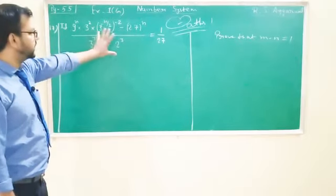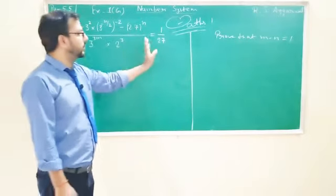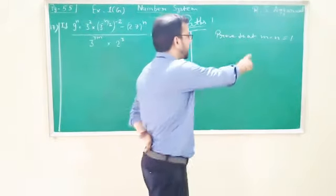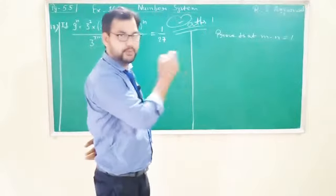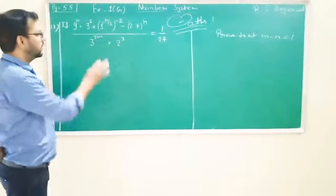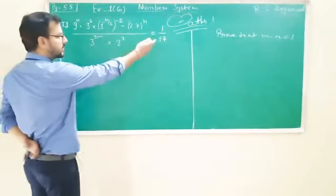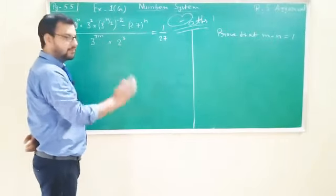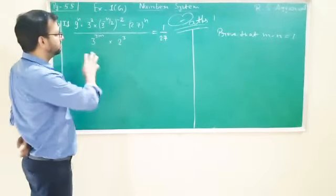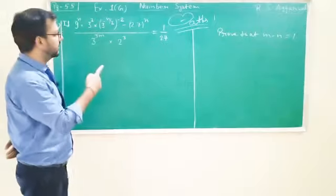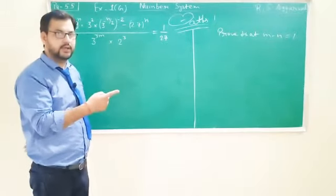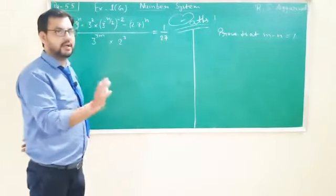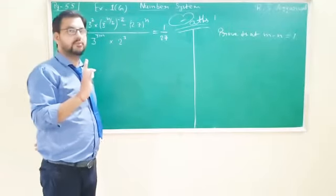Question number 17: if this value is equal to 1 upon 27, then prove that m minus n = 1. यह prove करना है. Now, equal में things हैं — पूरी given है — so let's solve it. Calculation बड़ी लग रही होगी, देखके डर लगता होगा — but आपसे easy method है: सबसे lowest power में convert करें, तो आराम से solve हो जाता है.